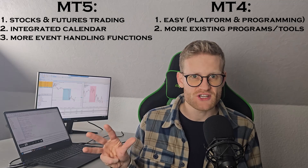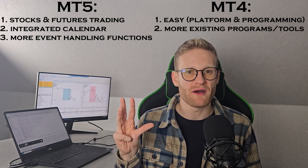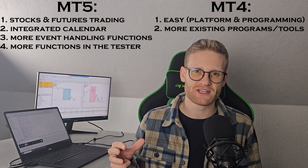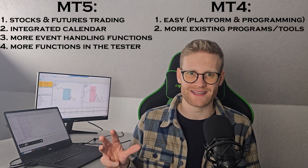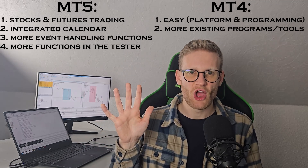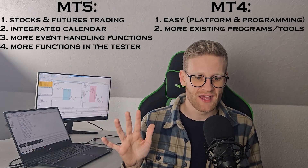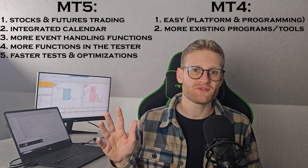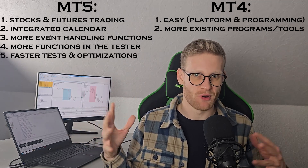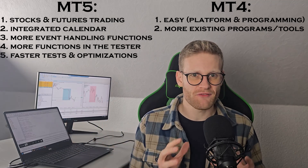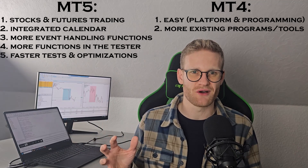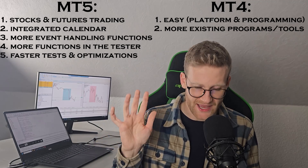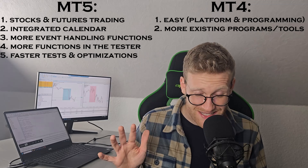In MetaTrader 5 the OnTimer function is available in the strategy tester, which was not possible in MetaTrader 4. And speaking of testing, strategy testing and optimization in MetaTrader 5 is way quicker — you will save a lot of time because it's more efficient. A lot of these benefits come back to the core efficiency of MetaTrader 5, which is arguably its major advantage.